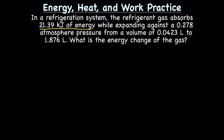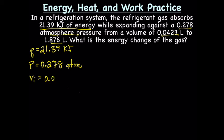So we have Q equals 21.39 kilojoules. What other information do they have here? We've got 0.278 atmospheres of pressure. It tells us directly what that is, so our pressure is 0.278 atmospheres. And what else do we have? We have two volumes, an initial volume and a final volume. Volume initial is 0.0423 liters, and our volume final is 1.876 liters.